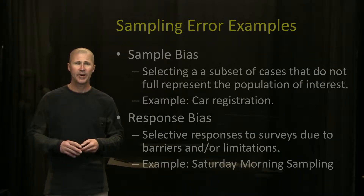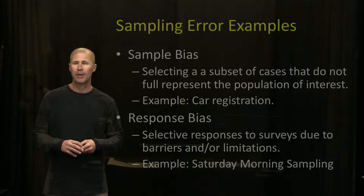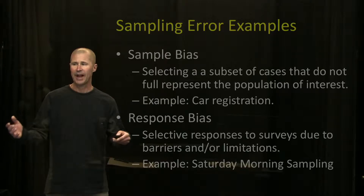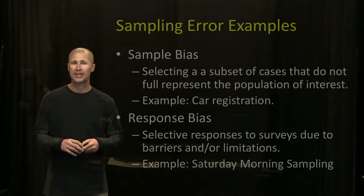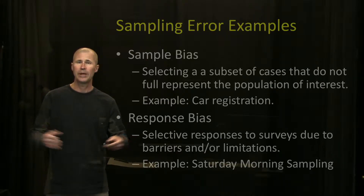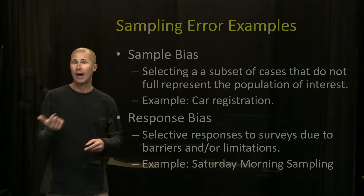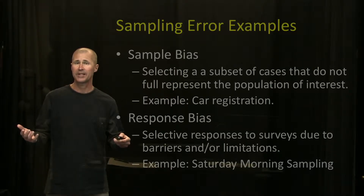Response bias refers to selective responses to surveys due to barriers or limitations in responding. For example, if you wanted to contact people about their satisfaction with street cleaning and you called a random sample of phone numbers on Saturday morning, a lot of people are home on Saturday morning, so you'd capture quite a few people. But you'd also miss those people who have to work on Saturdays or are out and about, so you're not going to capture those people — and that's response bias.